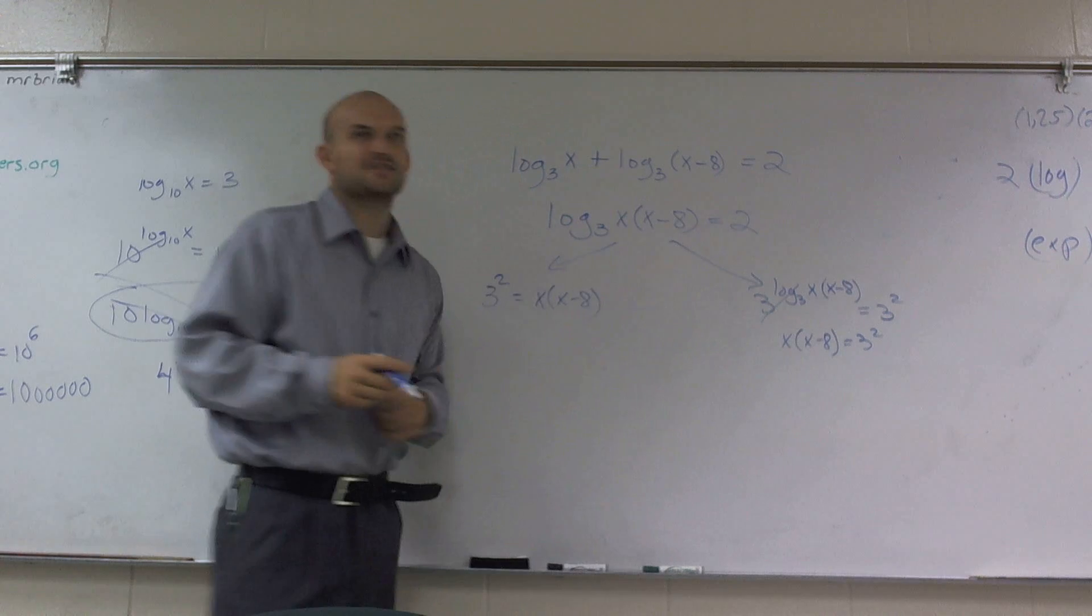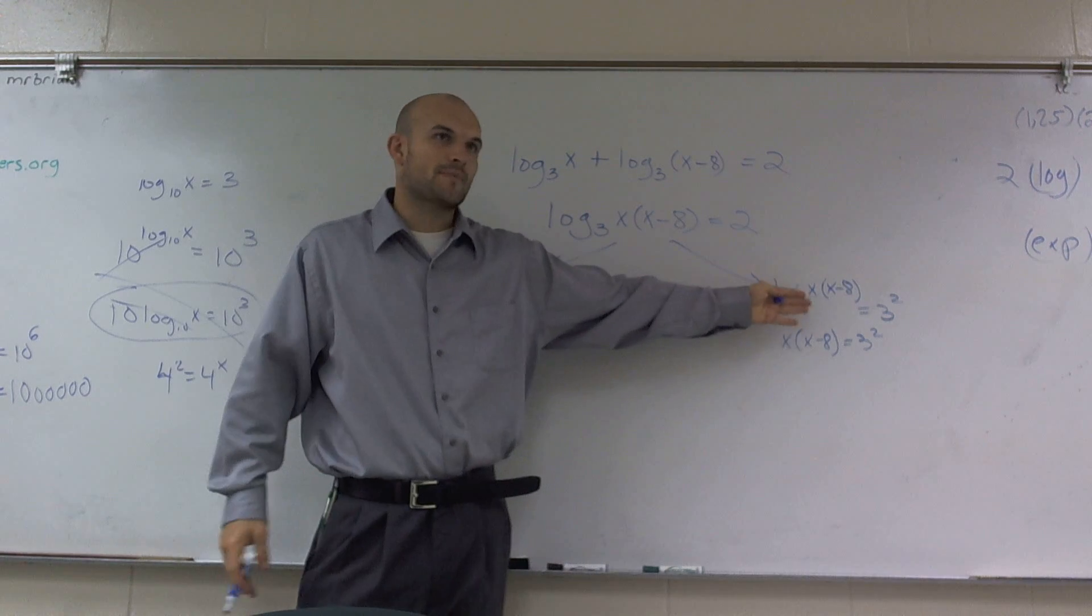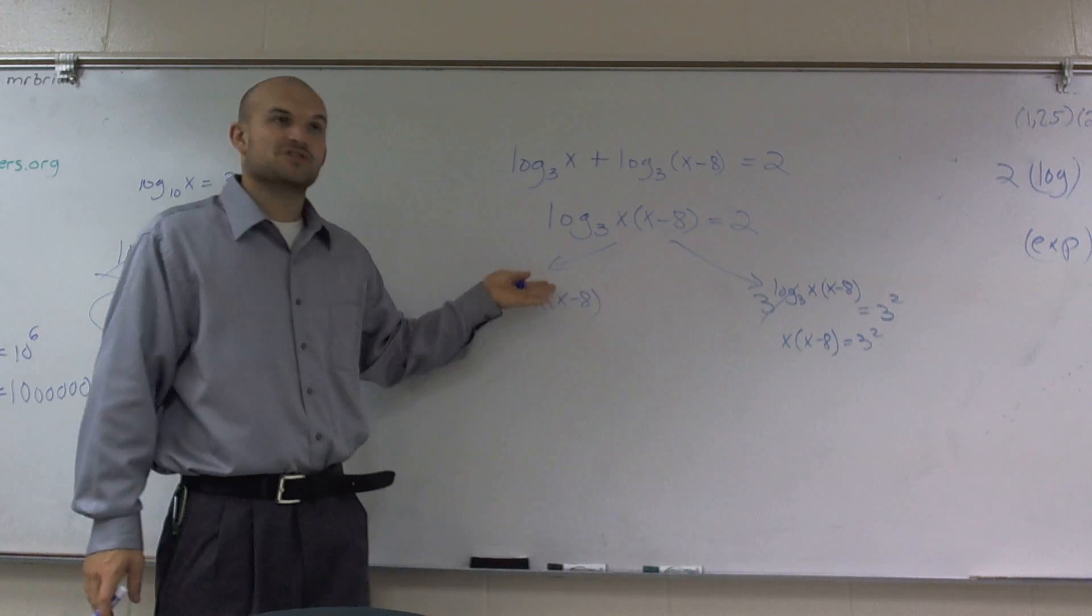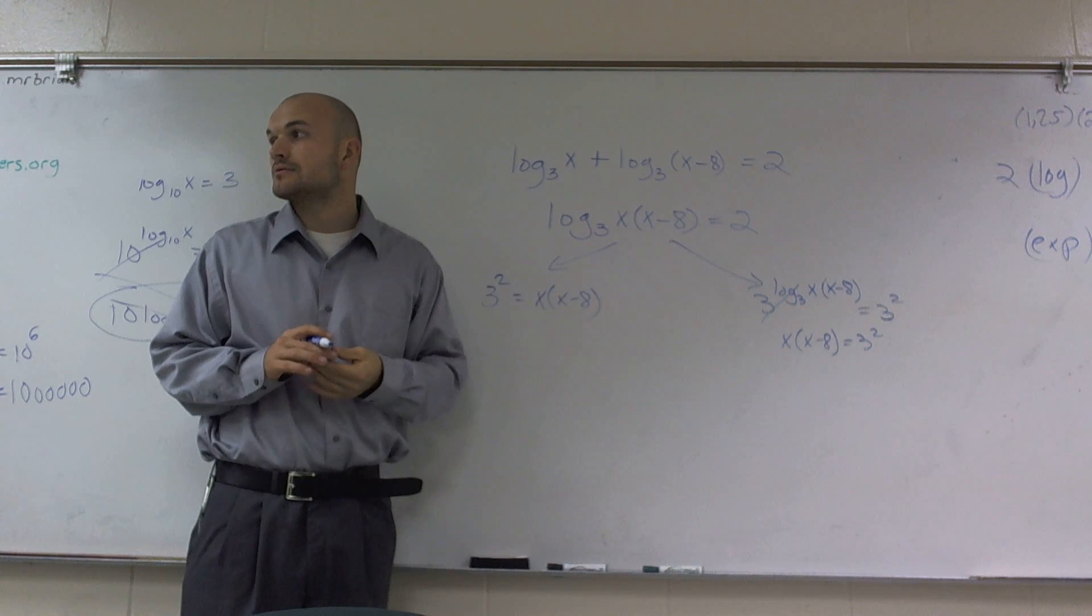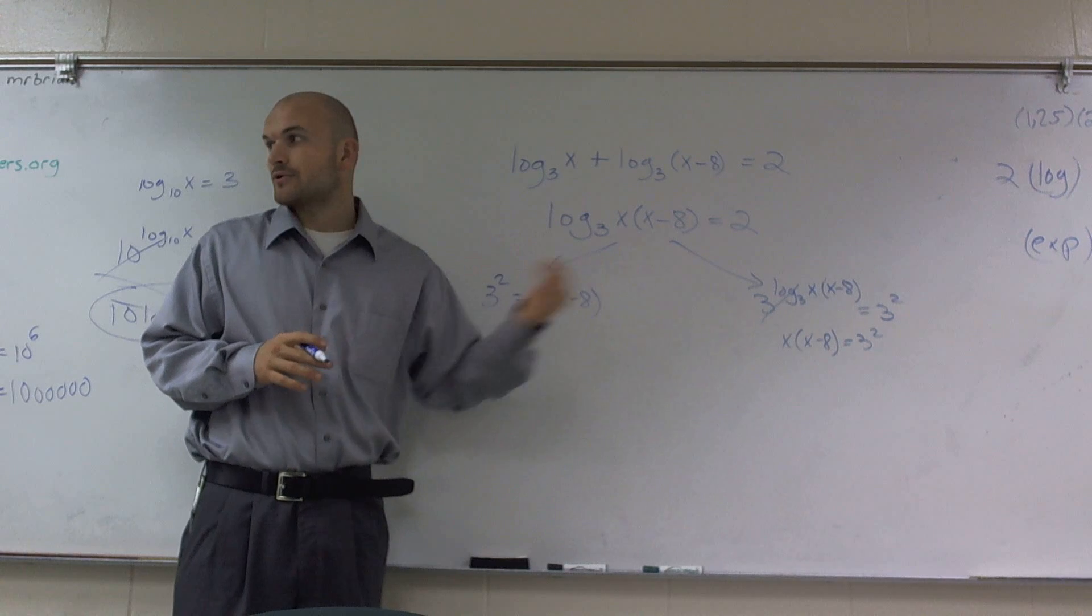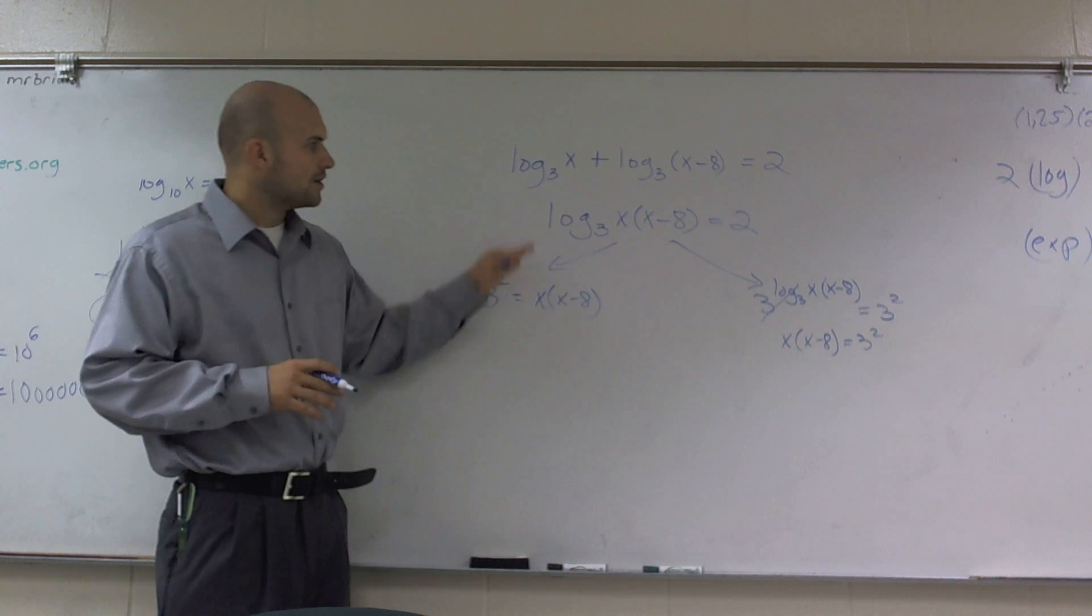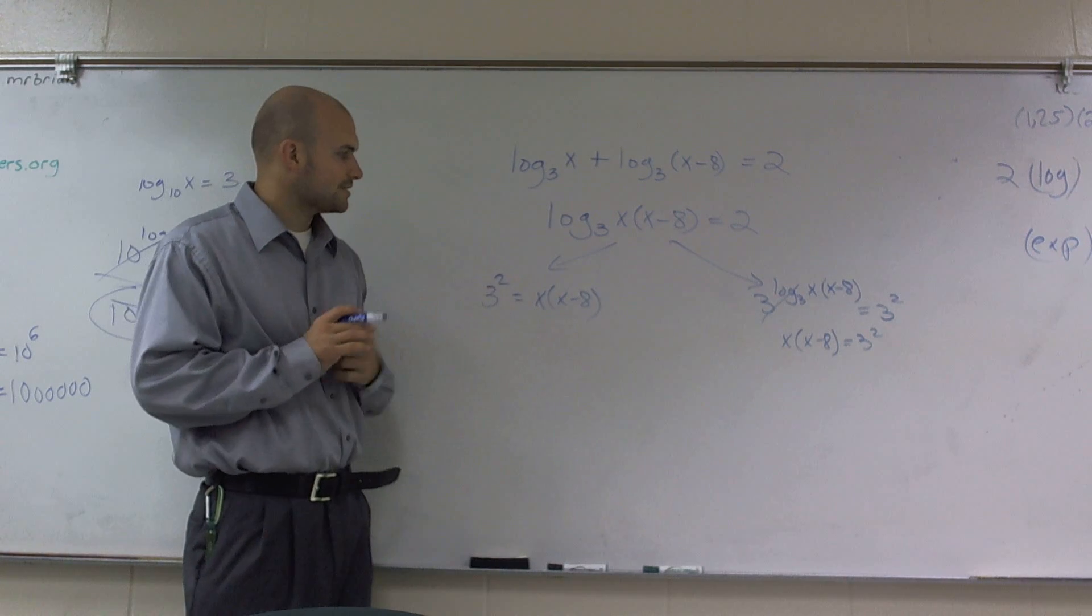Right? Just did it two different ways. Here, I used the one-to-one property and the inverse property. Here, I just switched it to logarithmic to exponential. Okay? You guys just need to understand both of them. Yep, I'm going to try working both sides, left and right.